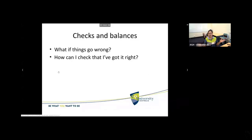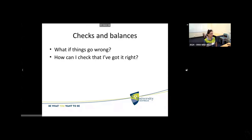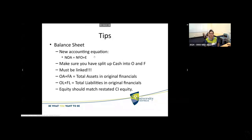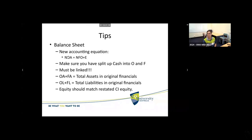If you've listened to the video and restated your balance sheet and it balances, you can check if you got it right. Or if it doesn't balance, what do you do? Normally when restating our balance sheet, we have a new accounting equation because we're splitting things into O and F — operating and financial. Our new accounting equation is: net operating assets equals net financial obligations plus equity. We're still balancing debits with credits — we're just rearranging the items into the O and F groups.